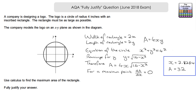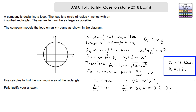Now let's manually find dA/dx using a non-calculator method. We have two functions multiplying together: 4x and √(16 − x²), so we use the product rule. Let u = 4x and v = (16 − x²)^(1/2) in index form. Differentiating: du/dx = 4. For dv/dx, we apply the chain rule.